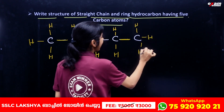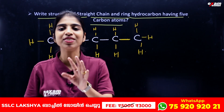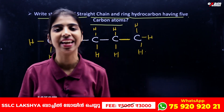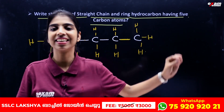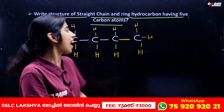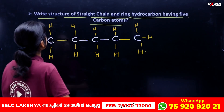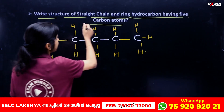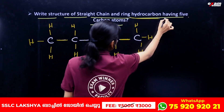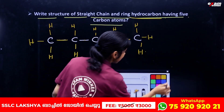This is the structure of the straight chain of 5 carbon atoms. This is the structure of the cyclic carbon atoms — a ring structure.